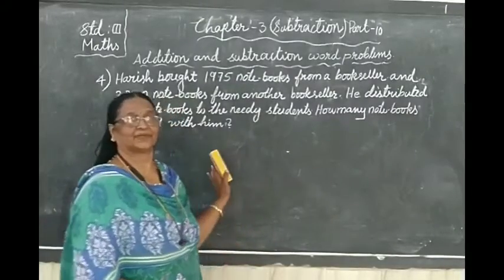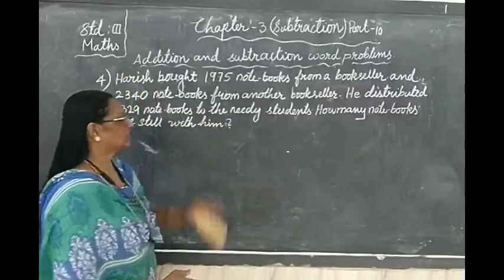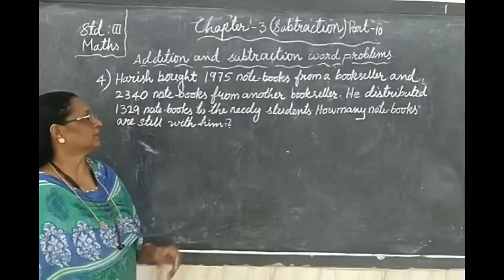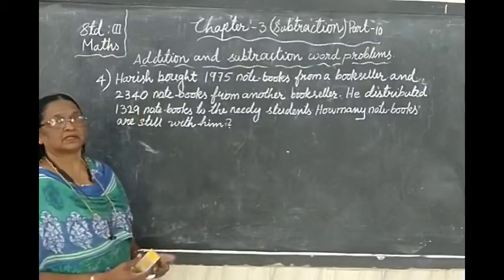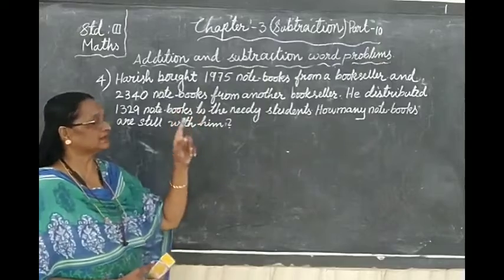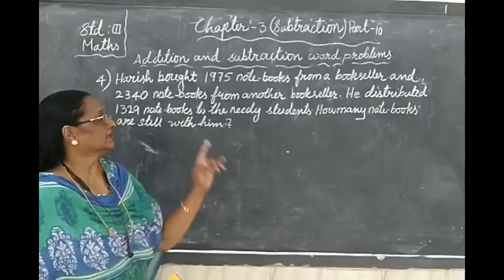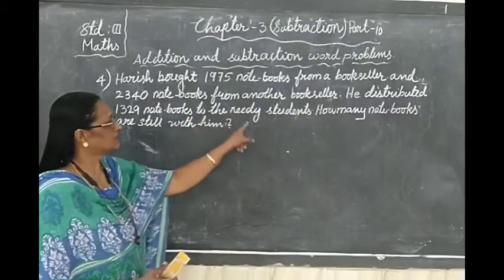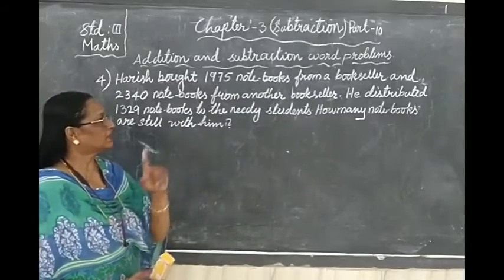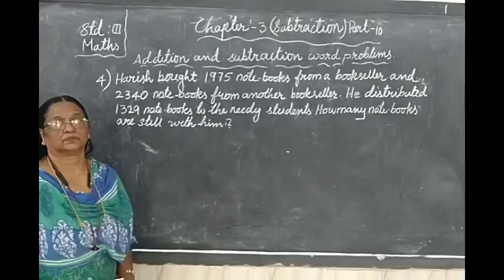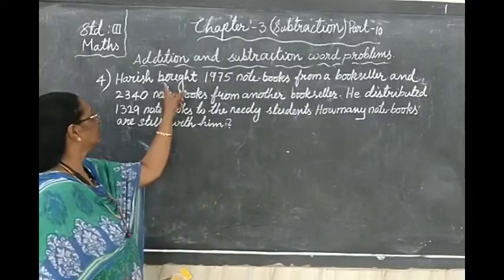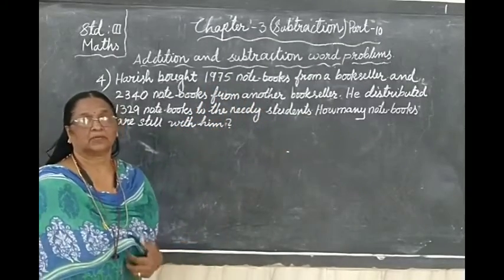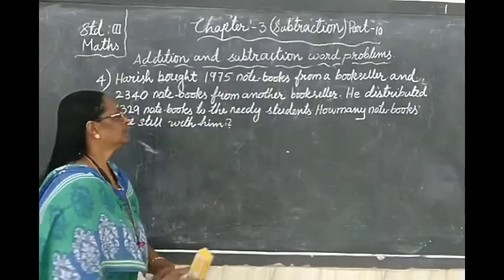Harish bought 1,975 notebooks from a bookseller and 2,340 notebooks from another bookseller. He distributed 1,329 notebooks to the needy students. How many notebooks are still with him? What did he do? First, he brought 1,975 notebooks from a bookseller.